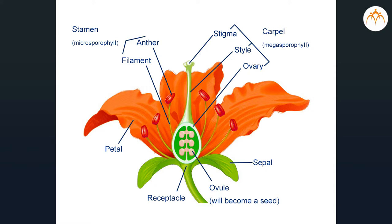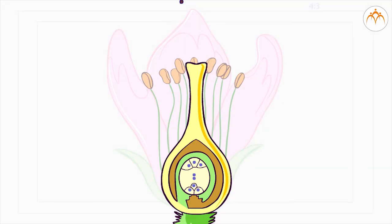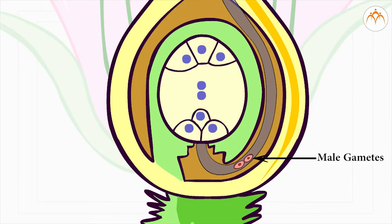Inside the ovule, the egg cell and two polar nuclei are produced by meiosis. Pollen grains are transferred from one anther to the stigma during pollination. Pollen grains germinate on the stigma to produce a pollen tube. This pollen tube carries two male gametes and reaches the embryo sac.